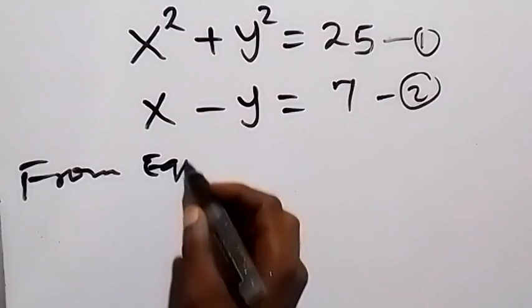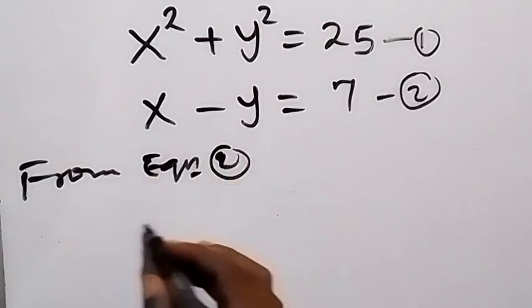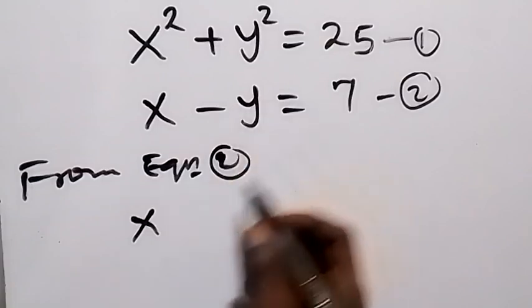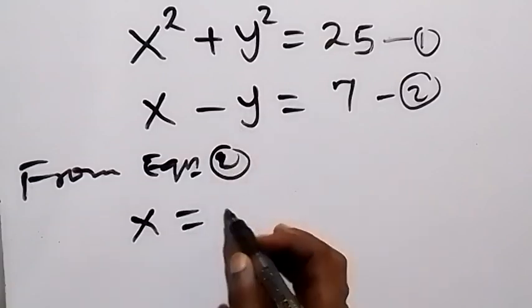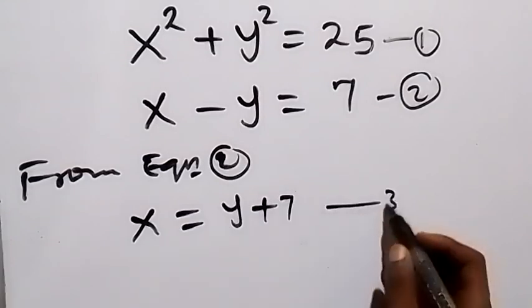From equation 2, let's make x the subject. We take y to this side, so minus y comes here and becomes plus. That's x equals y plus 7. Now let this be equation 3.